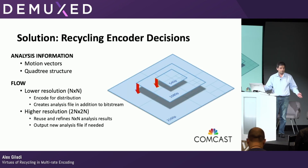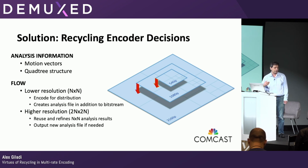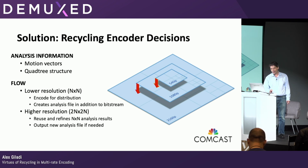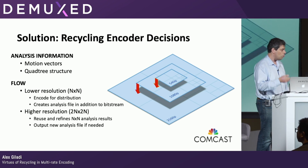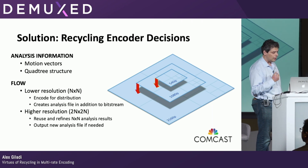The solution is very simple, and that's why it's a 10-minute talk. Just take encoder decisions and reuse them. Let's define analysis information — mainly this is motion vectors and quad tree structure, but also other data. We run a low-resolution encode — 540p, for instance — export it, and then reuse it at higher resolution.